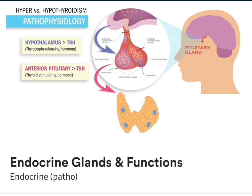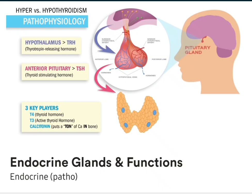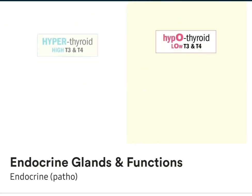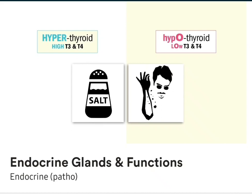And can you guess what the thyroid-stimulating hormone does? Well yes, it stimulates the thyroid. Once stimulated, the thyroid puts out three most important key players: T3 and T4, which are basically our active thyroid hormones, and also calcitonin, which basically puts a ton of calcium into the bone. Our memory trick: calcitonin tones down the calcium in the blood by putting a ton of calcium into the bone — calcitonin, a ton in the bone.